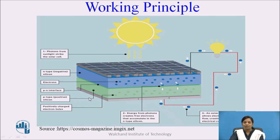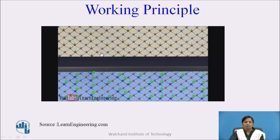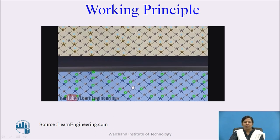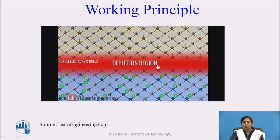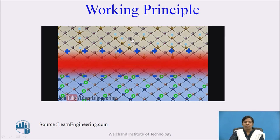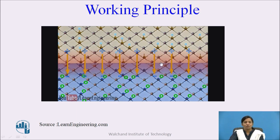The working principle of a solar cell: the N-type semiconductor consists of majority charge carrier electrons, and the P-type semiconductor consists of majority charge carrier holes. When N-type and P-type semiconductors are connected to each other, electrons from the N-type start diffusing into the P-type, neutralizing atoms and forming a depletion region. Once the depletion region is generated, a potential barrier and electric field are generated, preventing majority charge carriers from crossing the junction.